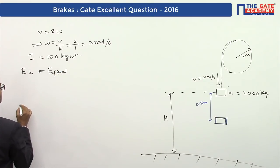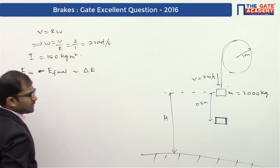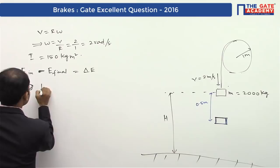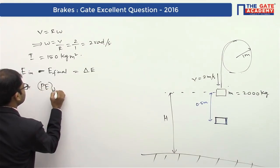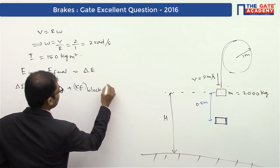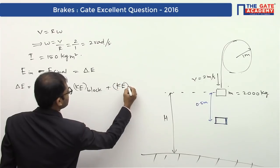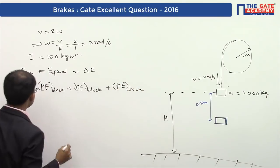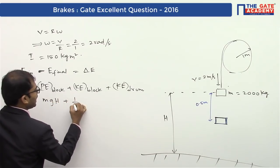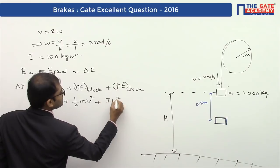Let's get this change of energy. ΔE = initial energy is potential energy of the block, kinetic energy of the block, and since moment of inertia of the drum is given, we should take kinetic energy of the drum also. So this comes out to be m·g·h + (1/2)m·v² + (I·ω²)/2.